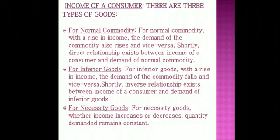The next factor is the income of a consumer. A rise in a person's income will lead to an increase in demand, and a fall will lead to a decrease in demand for normal goods. There are three types of goods: for normal goods, with a rise in income, demand also rises — a direct relationship exists. For inferior goods, with a rise in income, demand falls — an inverse relationship exists between income and demand for inferior goods.